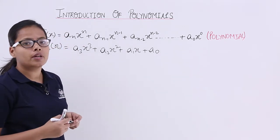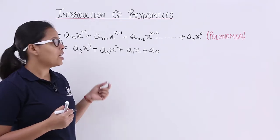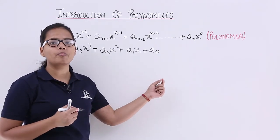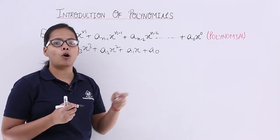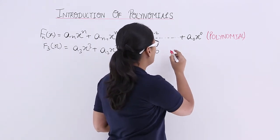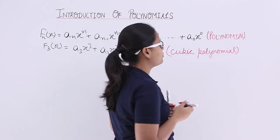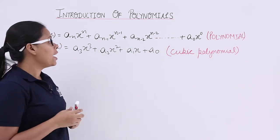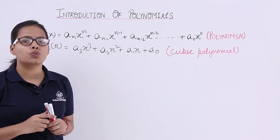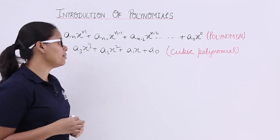As you can see, the highest exponent of x is 3, that's why this polynomial will become a cubic polynomial. And if the value of n is 2, then what will be this polynomial?